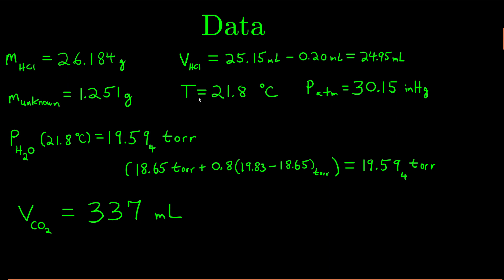So let's start out with some data. This is real data — I just ran the experiment real quickly one time, got some numbers. They're kind of okay, we'll see how they work out. This is my mass. I weighed about 25 mils of hydrochloric acid, and for me it weighed 26.184 grams.